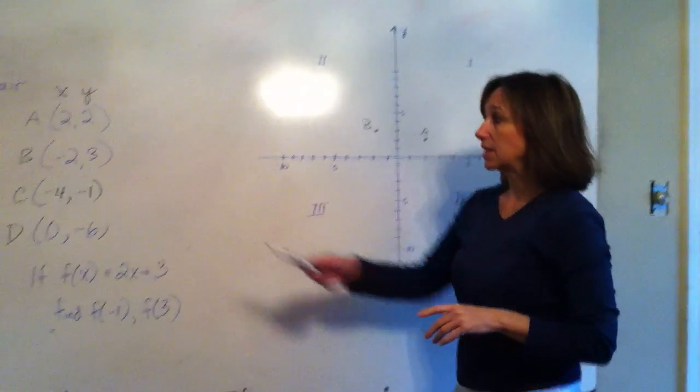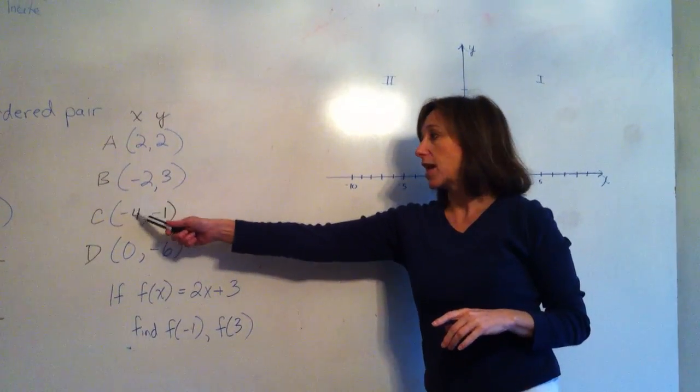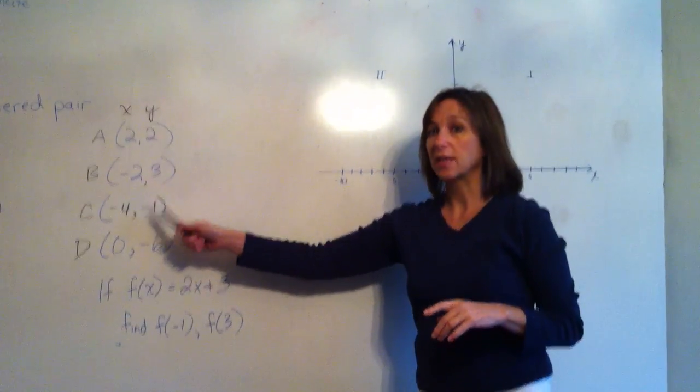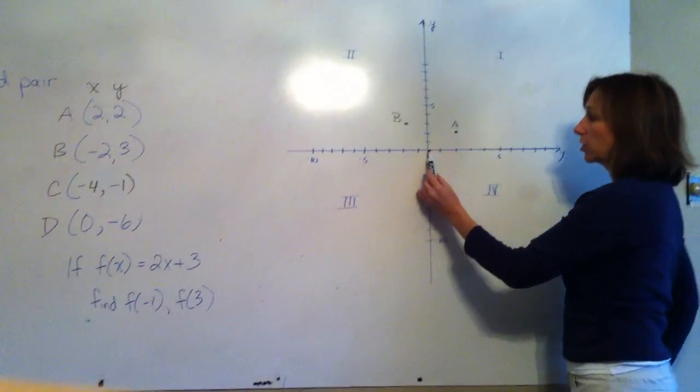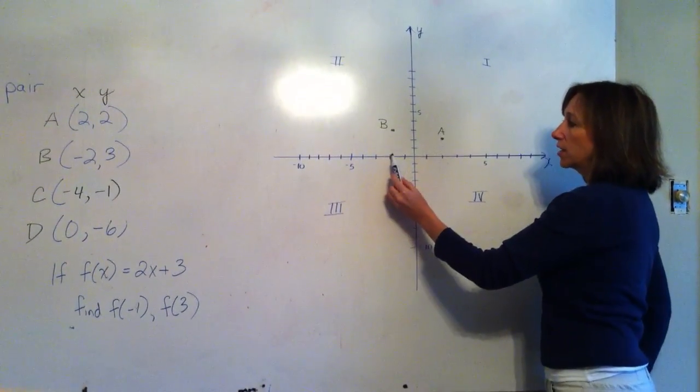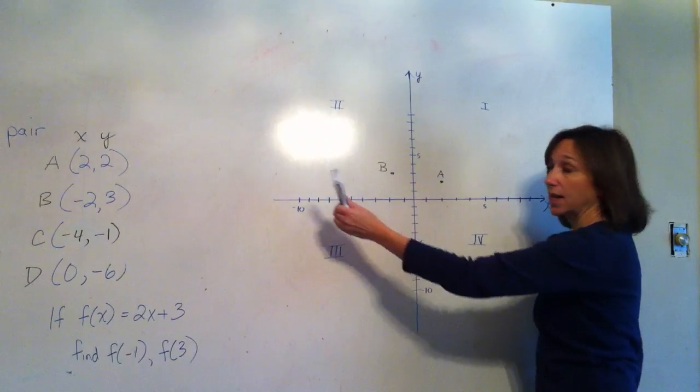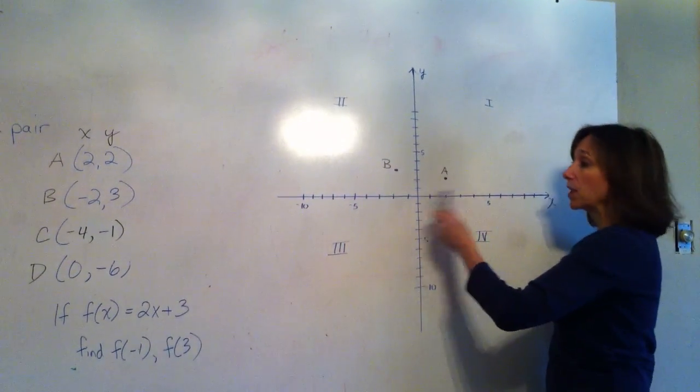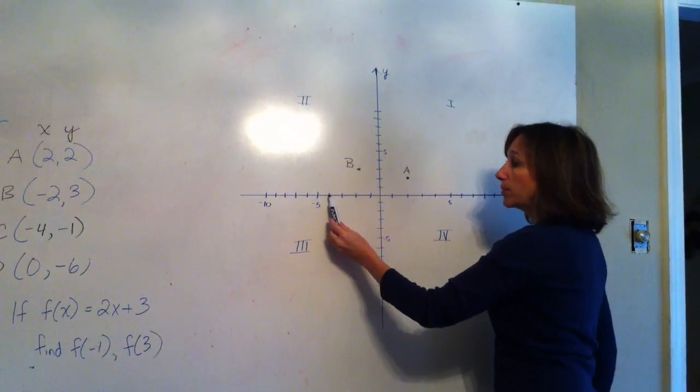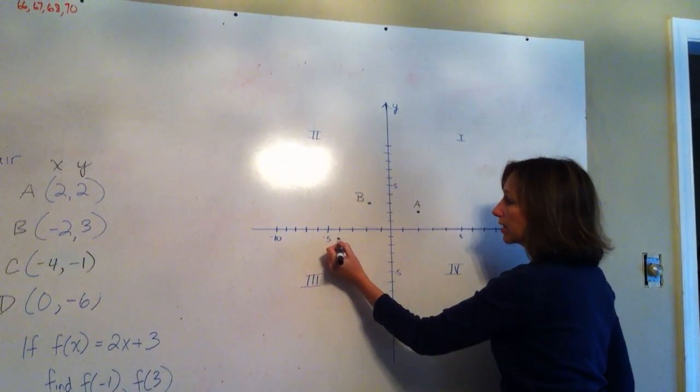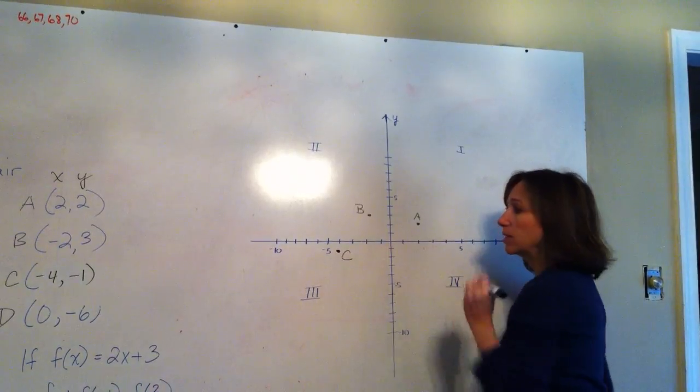Let's try another one, C. This one, the x-coordinate is -4, so we go on the x-axis -4. And we go along the y-axis -1. So we start at the center: 1, 2, 3, 4 in the negative direction. Just like a number line. Negatives are over here, positives are over here. So we go 4 to the left. And now we go down 1 because it's -1. So down 1 on the y-axis. And that would be our point, C.